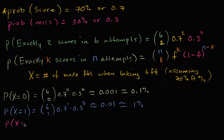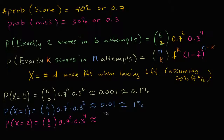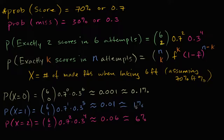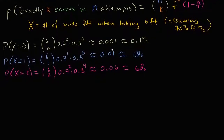So the probability that X is equal to two — that's essentially what our first video was about. This is going to be six choose two, times 0.7 squared, times 0.3 to the fourth power. We saw that this is approximately 0.06, or 6%. You could type these into a calculator for a more precise answer, but just to get a sense of what these probabilities look like — to the closest tenth of a percent — you actually get 6.0%.